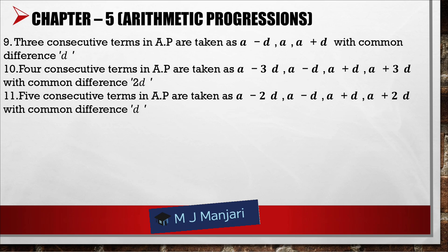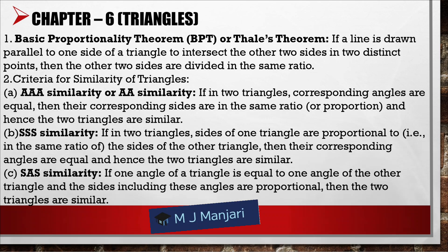Chapter 6: Triangles. Basic Proportionality Theorem (BPT) or Thales' Theorem: if a line is drawn parallel to one side of a triangle to intersect the other two sides in two distinct points, then the other two sides are divided in the same ratio. Criteria for similarity of triangles: AAA similarity — if corresponding angles of two triangles are equal, their corresponding sides are in the same ratio, and the triangles are similar. SSS similarity — if sides of one triangle are proportional to the sides of another triangle, their corresponding angles are equal, and the triangles are similar. SAS similarity — if one angle of a triangle equals one angle of another triangle and the sides including this angle are proportional, then the two triangles are similar.